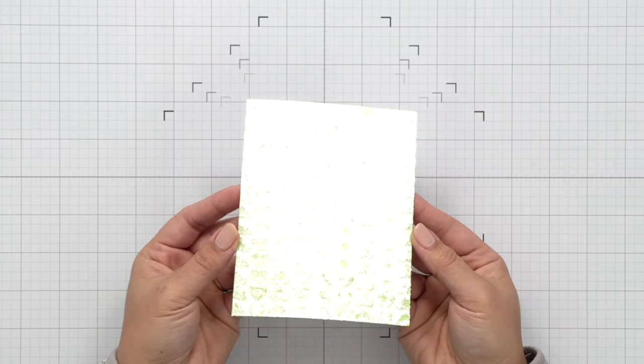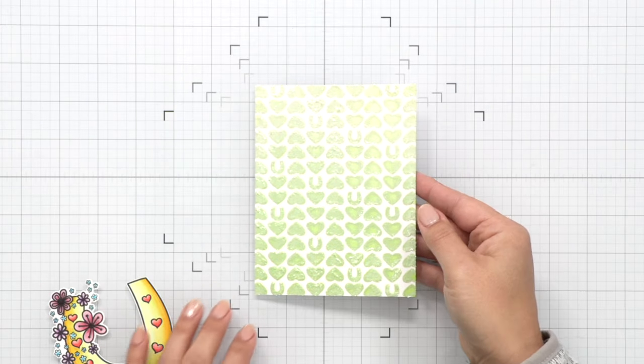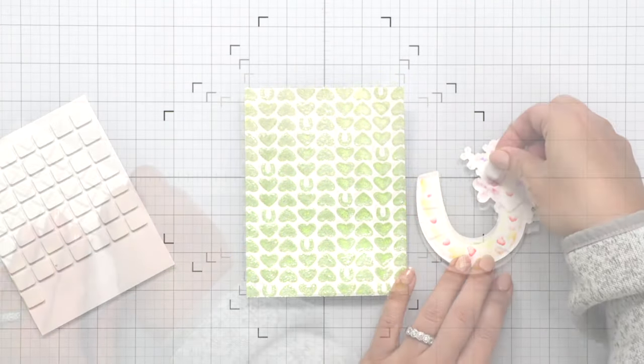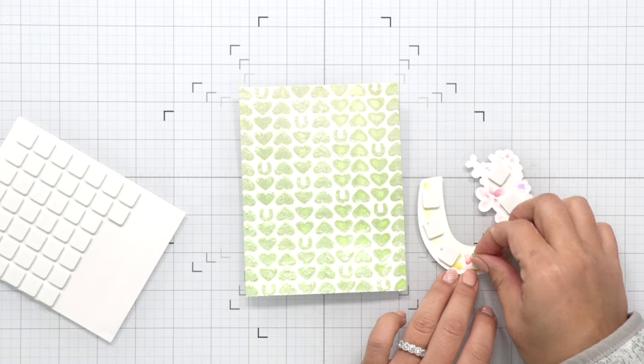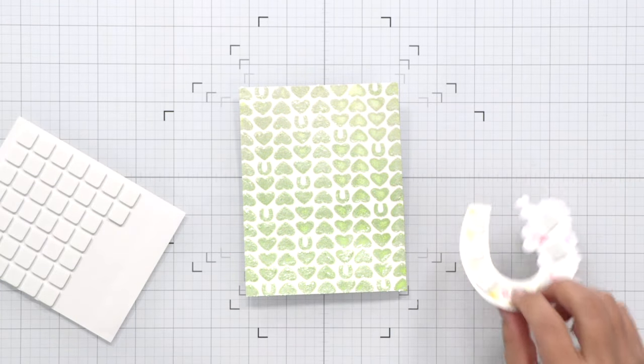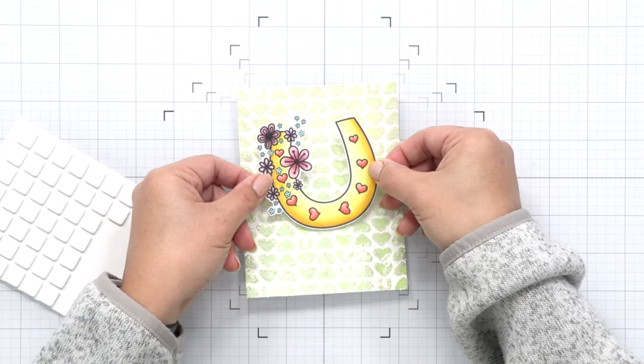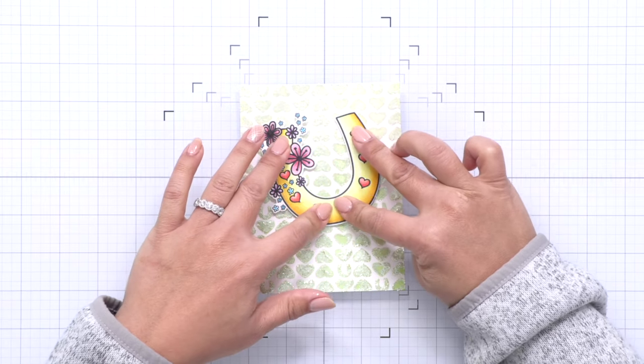Now here is the background and it's air dried and it dried pretty fast while I was coloring that horseshoe. It is still wet but just a tad. If you're not comfortable just wait a little bit longer or you can heat it with a heat tool to speed up the drying process.